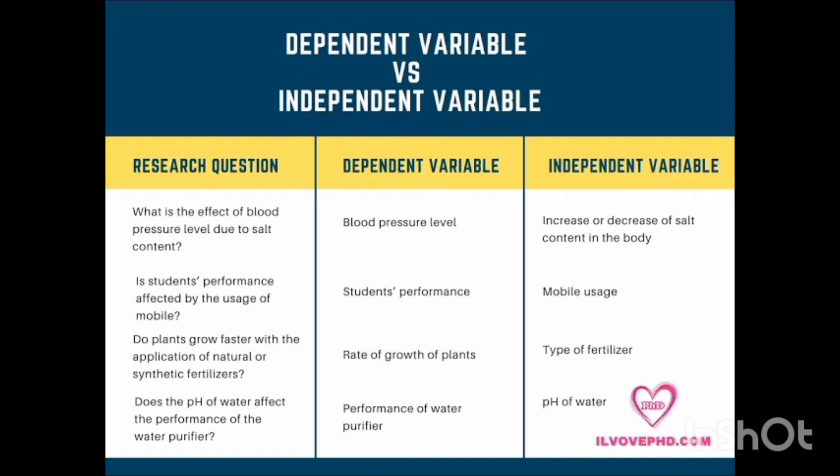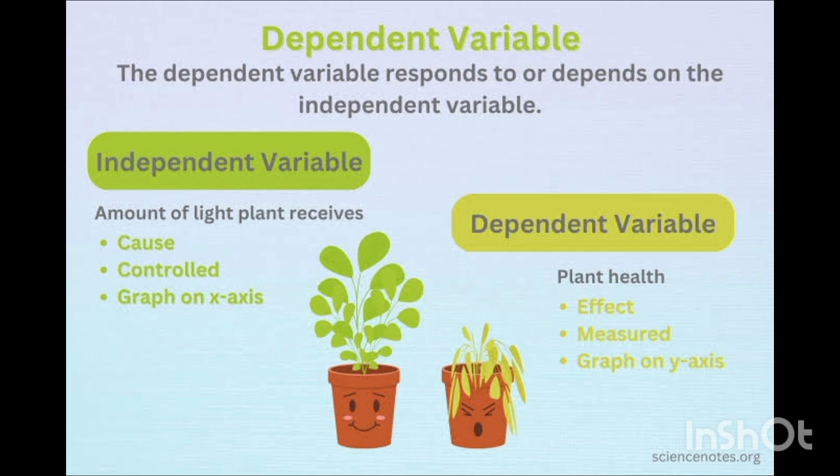'Do plants grow faster with the application of natural or synthetic fertilizer?' The dependent variable is the rate of growth of plants and the independent variable is the type of fertilizer. Obviously, if you give higher quality fertilizer, the plants will grow more.